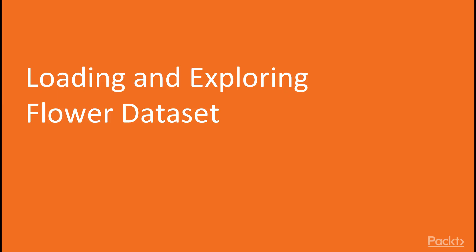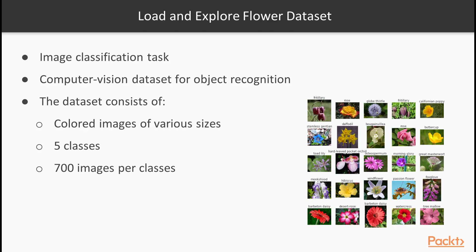We're going to load and explore our flower dataset. This flower dataset is a computer vision dataset for object recognition, so this is an image classification task. Our dataset consists of colored images of flowers of various sizes. In this specific version of the dataset, we're going to cover five different classes of flowers, and we're going to have about 700 images per class.